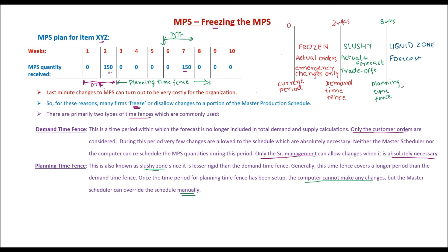The timeframe after the planning time fence is known as the liquid zone. Any changes can be made to the MPS in this zone as long as they are within the limits of the production plan. The production plan may have some constraints due to capacity, so as long as those are taken care of, any changes can be made.